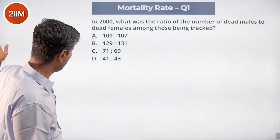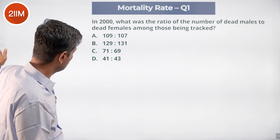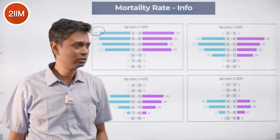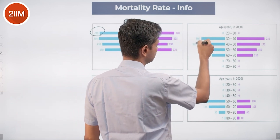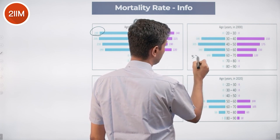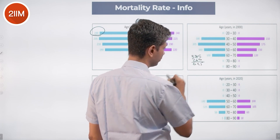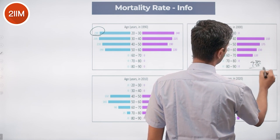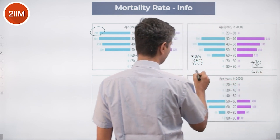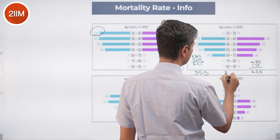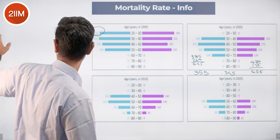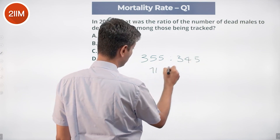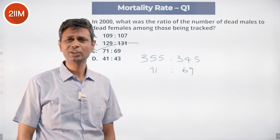In 2000, what is the ratio of number of dead males to dead females among those being tracked? Those alive in 2000: 180 plus 205 is 385, plus 260 is 645. For females: 210, 360, 480 plus 175 is 655. How many have died? 1000 minus 645 is 355 males died. 1000 minus 655 is 345 females died. So the ratio is 355 to 345. Dividing by 5, that's 71 to 69. That's a freebie of a question.